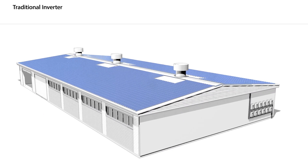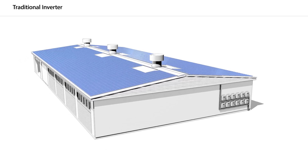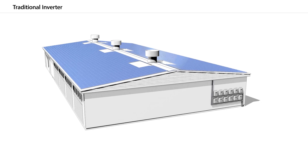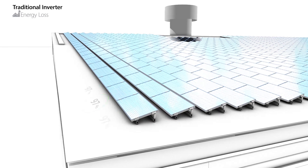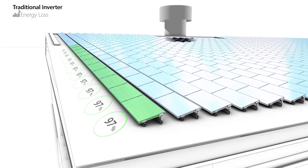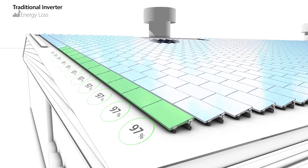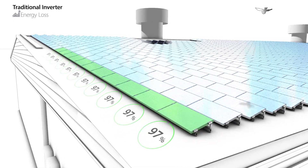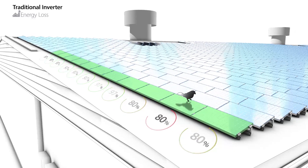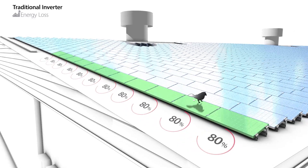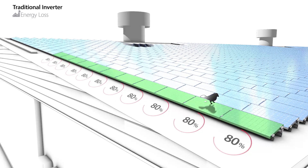Although traditional topology using string inverters is still used in the majority of large-scale installations, it suffers from a number of significant drawbacks. First, the system power output is limited. In traditional systems, panels are wired in series as a string. Each panel has its own power production profile, which is a function of its manufacturing variables, installation parameters, and shading patterns. This means that panels don't usually work at their maximum power point.